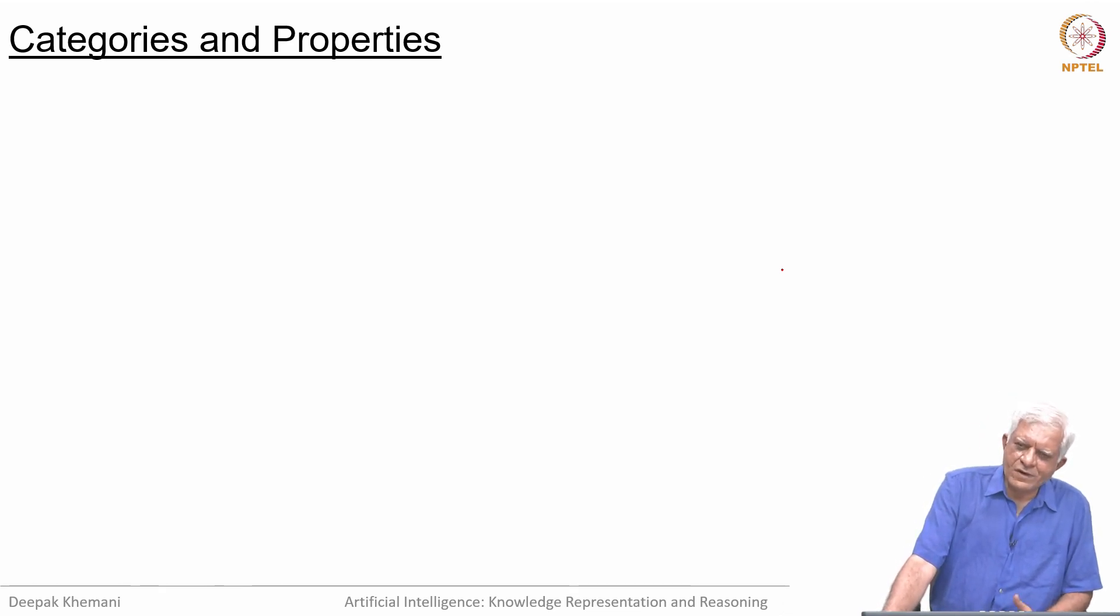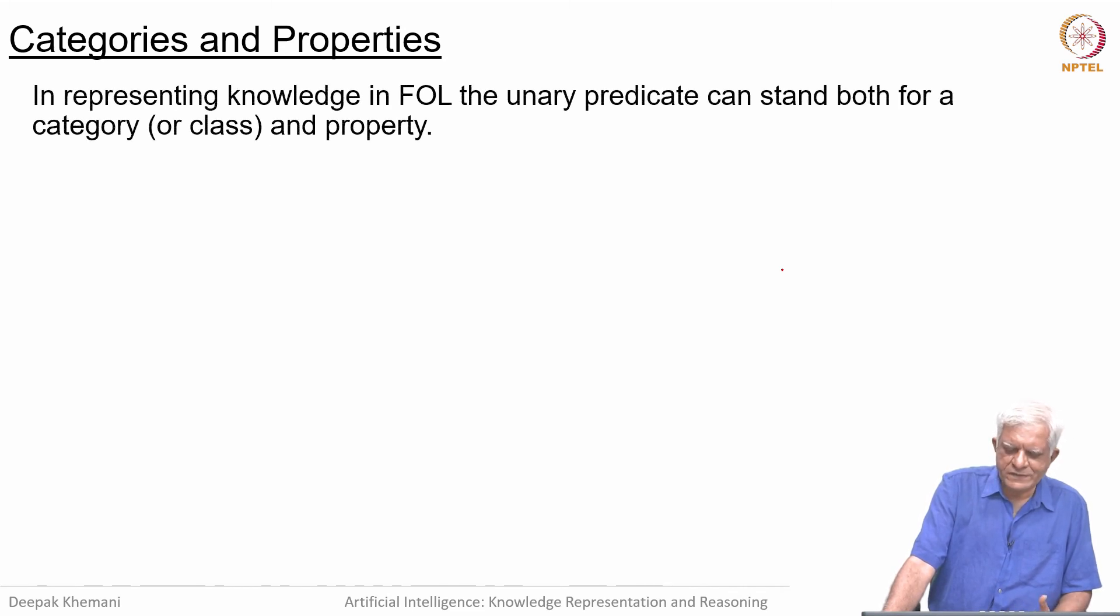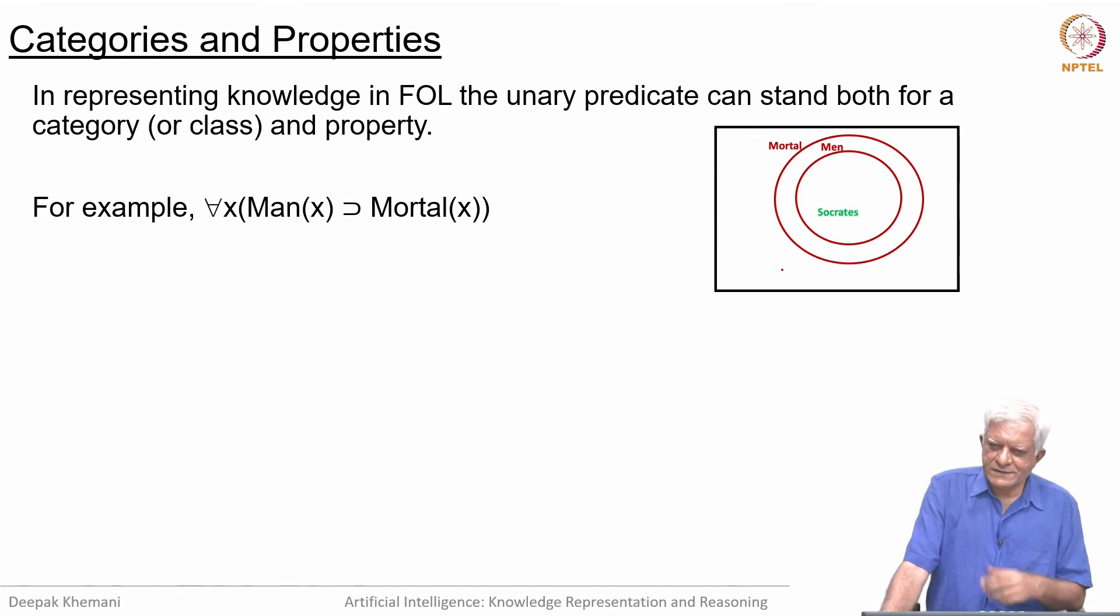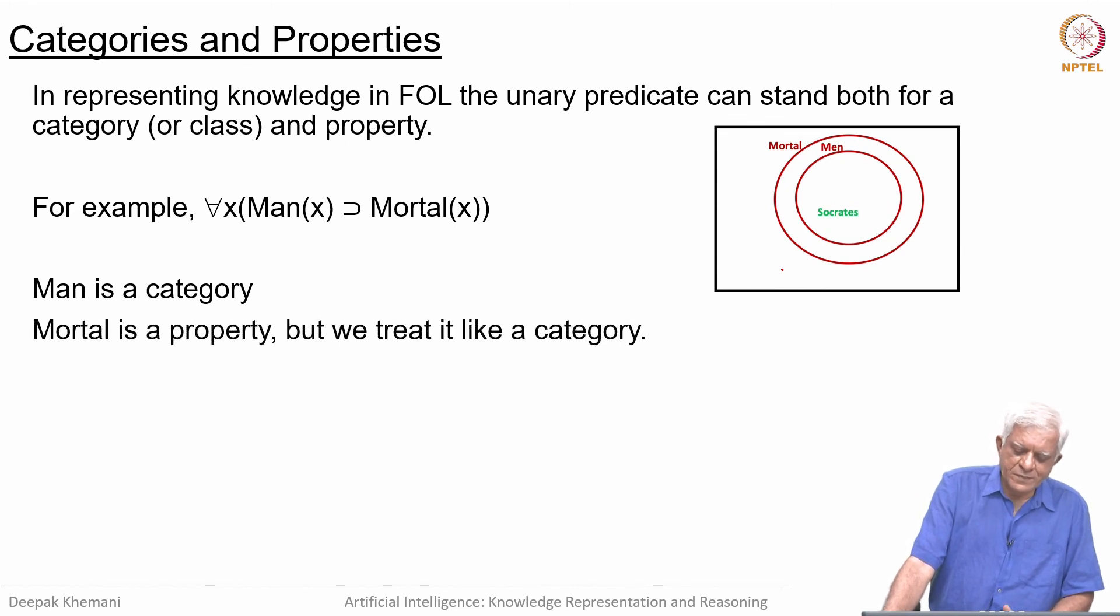We have said that all men are mortal, for example, and one of them is a category. Man is a category, it is a subset, it is a class, it is a kind of thing, whereas mortality is a property. It is a property of certain entities that they are mortal. We have a slight distinction between categories and properties, but in first-order logic we treat them as the same. When we write that for all x Man(x) implies Mortal(x), we just think of them, the interpretation of both of these predicates is a subset of the domain. We have seen this example earlier: man is a category, mortal is a property, but we treat it like a category. It is as if we are thinking of a class of mortal entities, whereas we would like to conceptually think of it as a property of men and dogs and cats and so on.